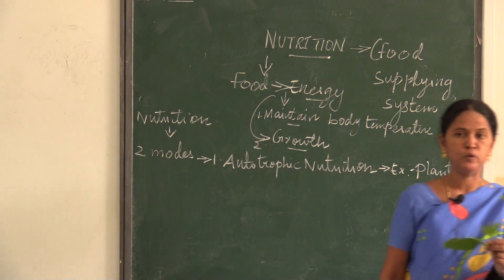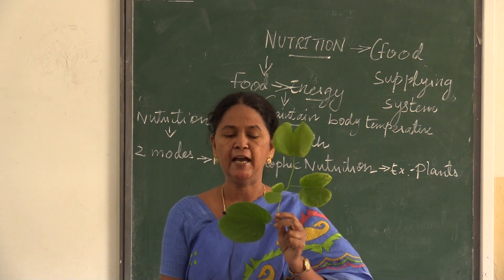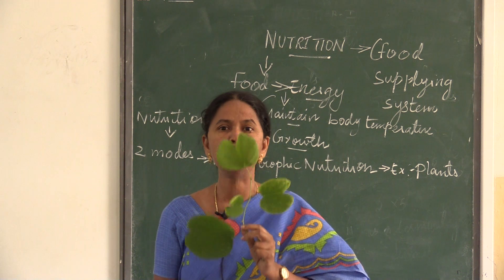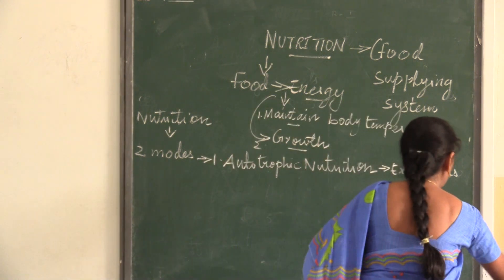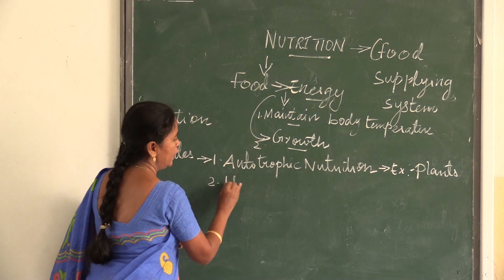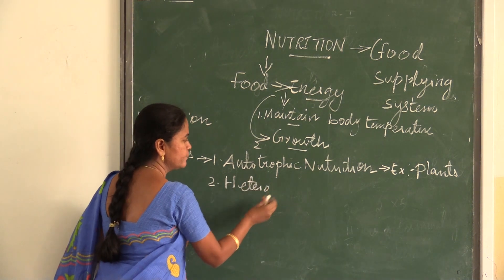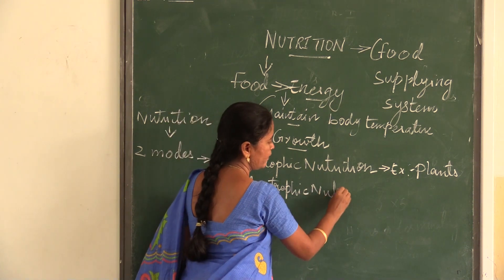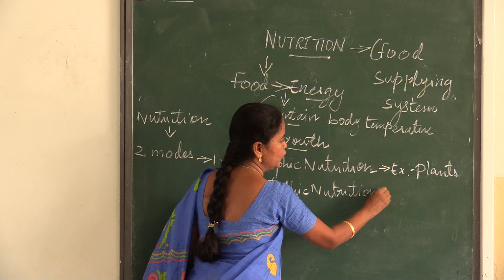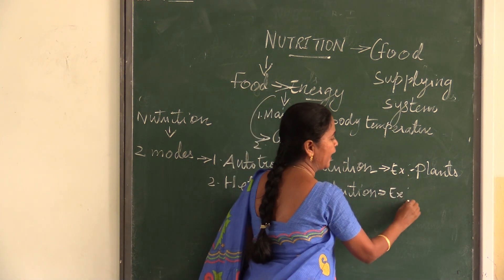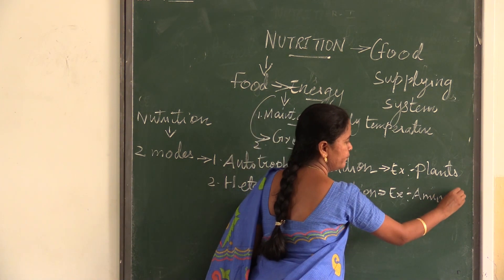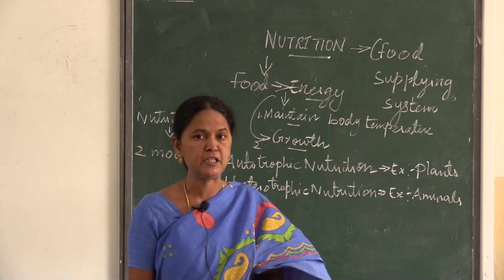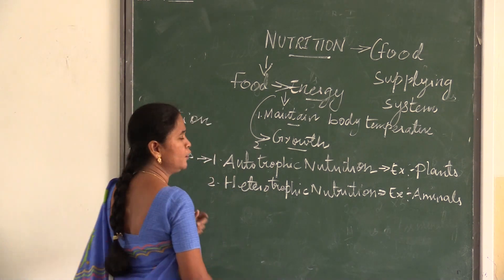When we talk about plants, they are green in colour. They have the capacity to absorb solar energy and can synthesize their own food material. The second mode of nutrition is heterotrophic nutrition. Examples are animals. We also come under heterotrophic nutrition, where we cannot prepare our own food material and depend upon other organisms.